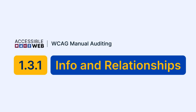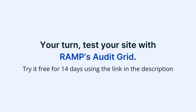That completes the audit for Success Criterion 1.3.1 using RAMP's Audit Grid and Chrome Extension. Now it's your turn — test your site with RAMP's Audit Grid. Try it free for 14 days using the link in the description.